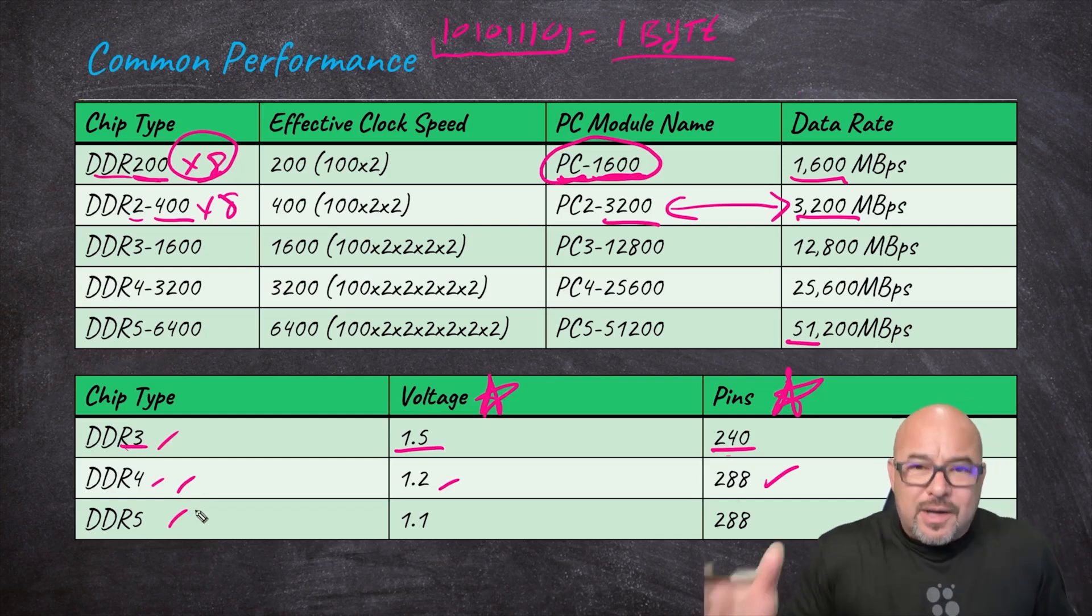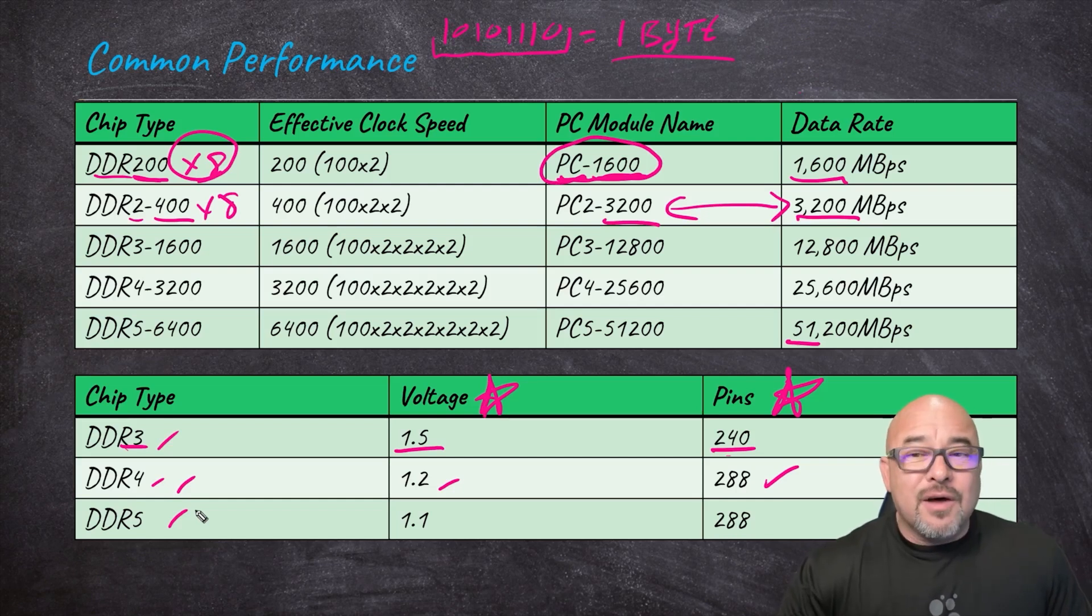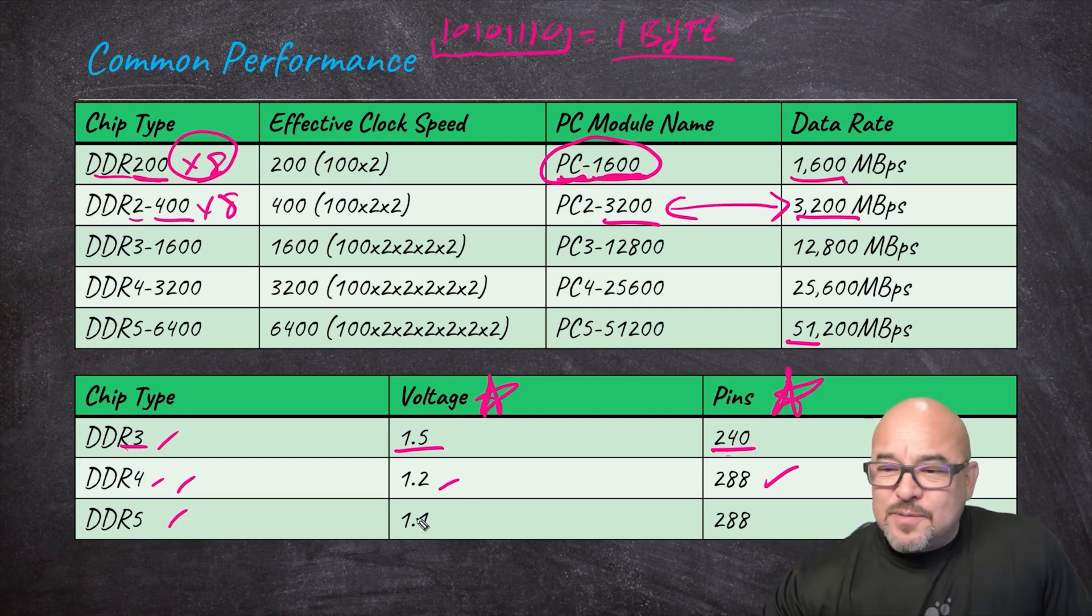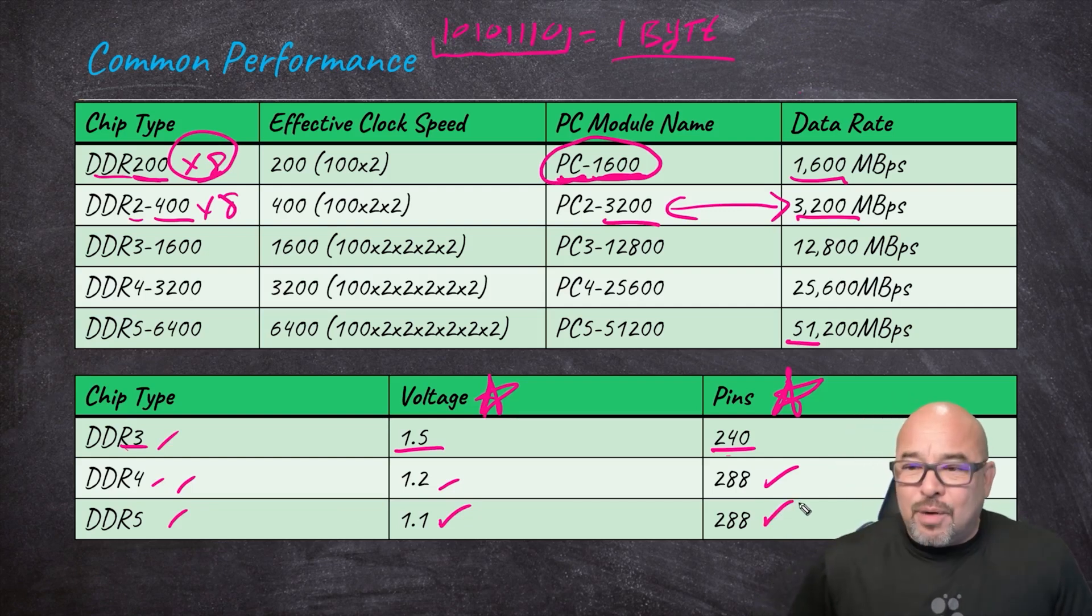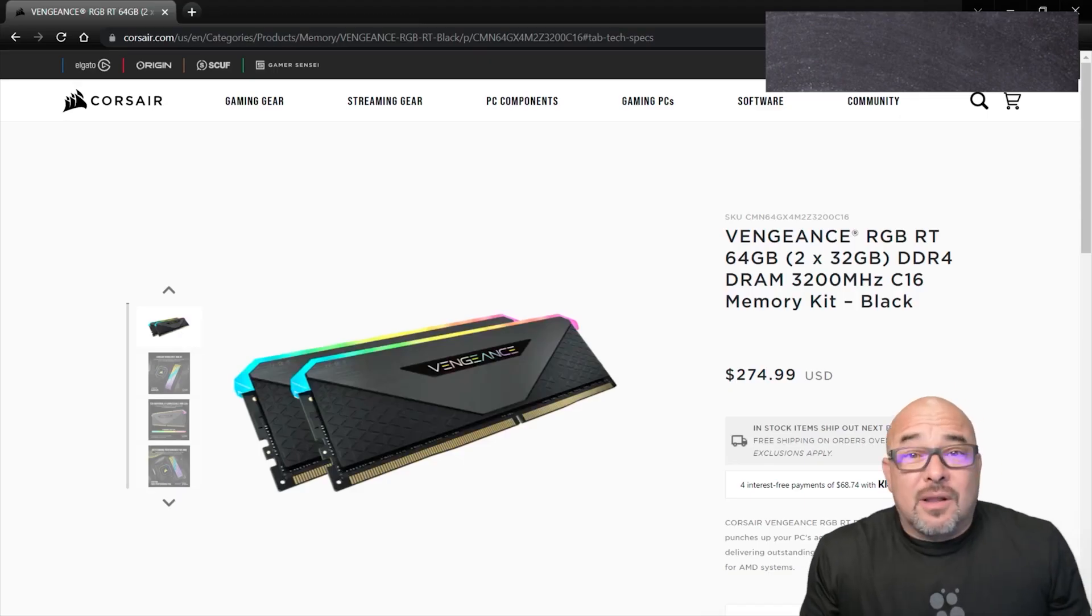DDR5 also uses two notches, but they're again slightly offset. So you cannot install any of these in other DDR slots. I can't install DDR3 in a DDR4 or 5, I can't install a DDR5 in a DDR4 or DDR3 and so forth. But anyway, the reason why I bring that up is because let's go to DDR5, it's a little even lower voltage, but it has the same pin number as DDR4. That does not mean that they are cross compatible. If the motherboard supports DDR4, you have to install only DDR4, not DDR3, not DDR5.